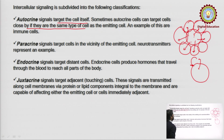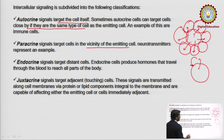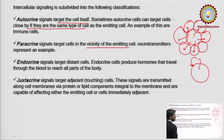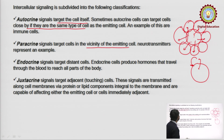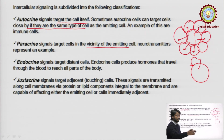Next is paracrine signaling. In this, the target cell is in the vicinity of the emitting cell. The best example of this is the neurotransmitter, in which a neuron generates a signal molecule to the next neuron.